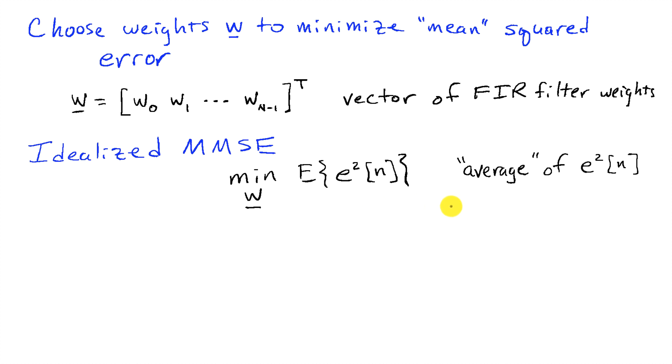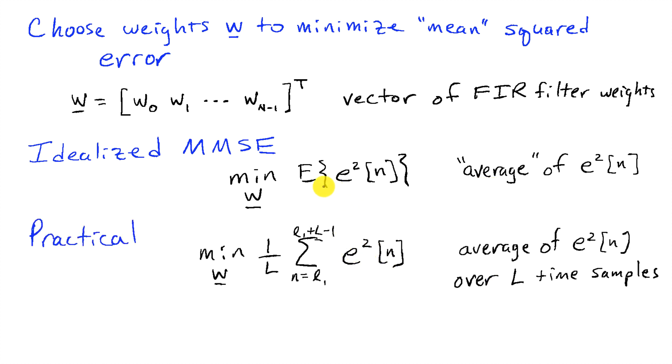And what this really means is that we are trying to find the w that makes e squared of n as small as possible on average. Now in practice, we don't have probability distributions and statistics for our data. So what we have is our data itself.